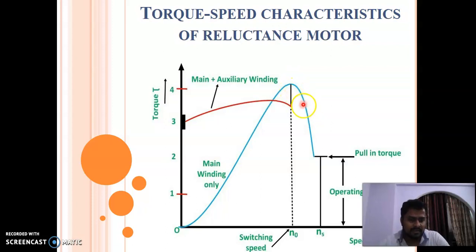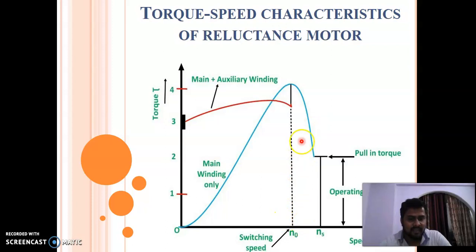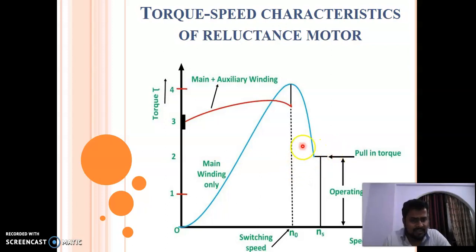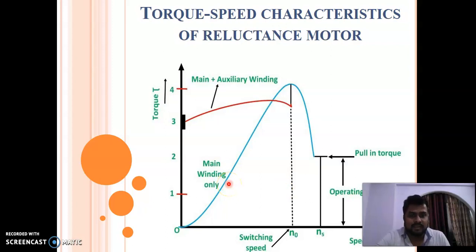The main winding characteristics, shown by the blue line, indicate that torque is directly proportional to slip. As slip decreases, torque decreases accordingly. When speed reaches synchronous speed, the induction torque becomes zero. At this point, only reluctance torque is developed, and it is the reluctance torque that keeps the motor operating at synchronous speed. It is the reluctance torque alone which is responsible for operation at synchronous speed.